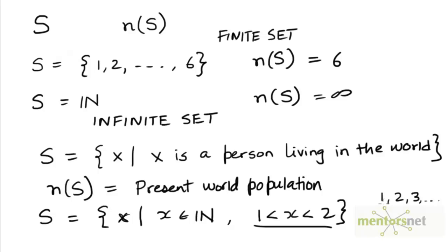Now there is no natural number that lies between 1 and 2. This means that there is no such number X that could be a member of the set S.